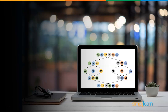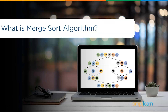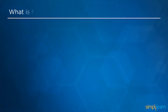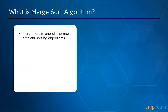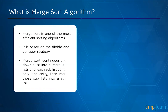Now let us get into the merge sort algorithm. Merge sort is one of the most efficient sorting algorithms. It is based on the divide and conquer strategy. Merge sort continuously divides a list into numerous sublists until each sublist contains only one entry, then merges all those sublists into a sorted list.